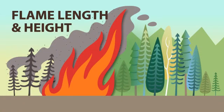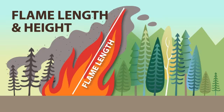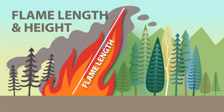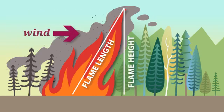The last two concepts I will introduce are flame length and flame height, which are commonly used as surrogates to describe fire line intensity because they are easier to observe and measure in the field. The flame length is the distance between the flame tip and the base of the midpoint of the flame at ground level. The flame height is only measured at the leading edge of the front of the fire and is the average maximum vertical extension of the flame.